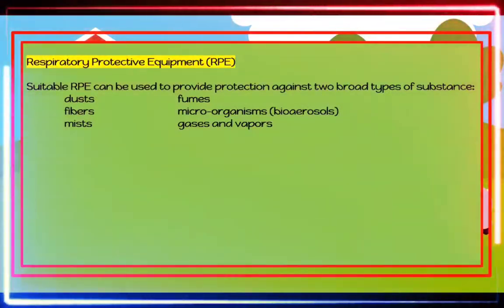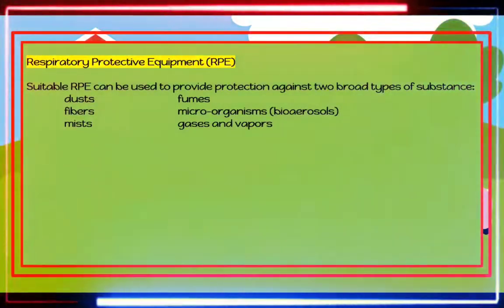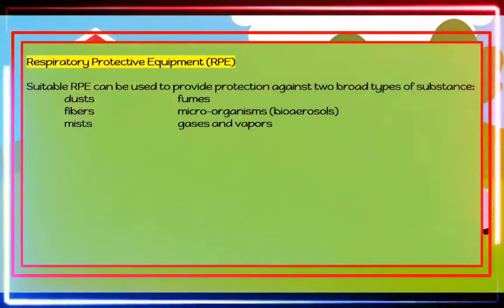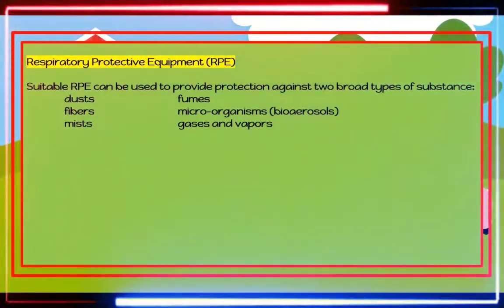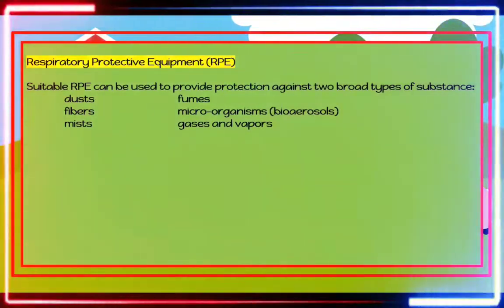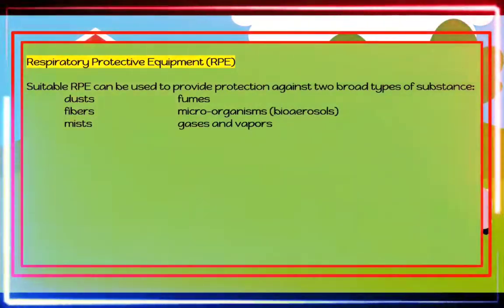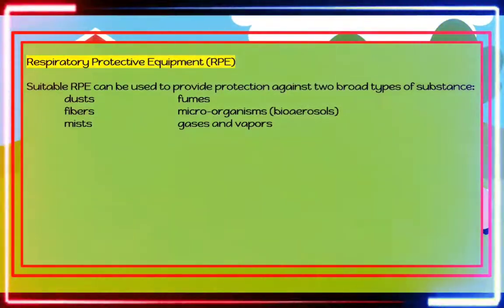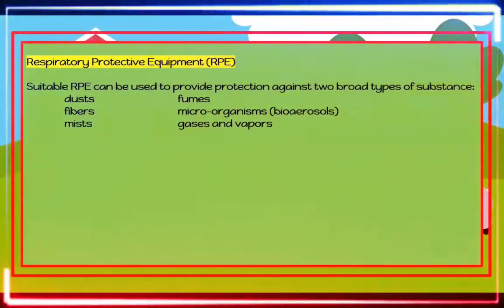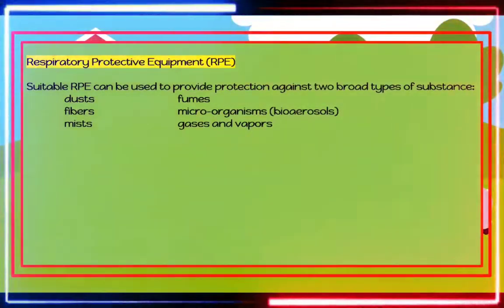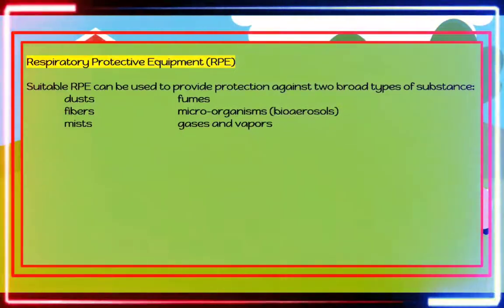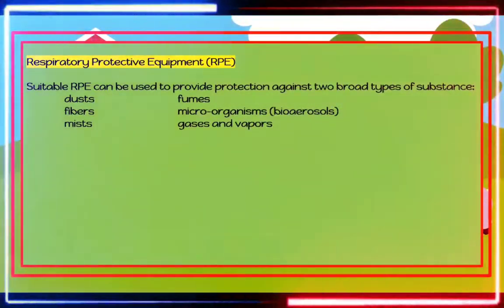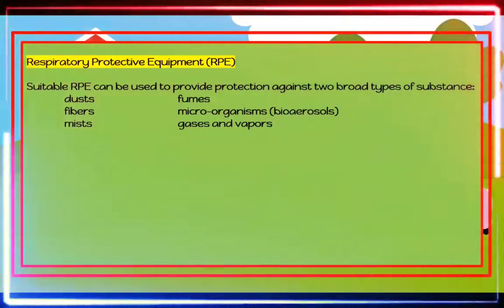Respiratory Protective Equipment (RPE): Suitable RPE can provide protection against two broad types of substances: dust, fibers, mists, fumes, and microorganisms; and gases and vapors. Respirators come in various forms including disposable half-mask respirators, full-face mask respirators with filters, or powered respirators.